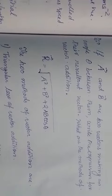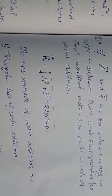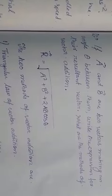If a vector and b vector are two vectors making an angle theta between them, write the expression for their resultant vector. And what are the methods of vector addition?